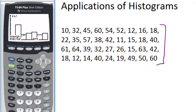And I can keep scrolling and see between 20 and 30, there were 4. Between 30 and 40, there were 5. 40 and 50, there were 6. And so on. So that's how you can use your calculator to make a histogram and then analyze the histogram using the trace button.